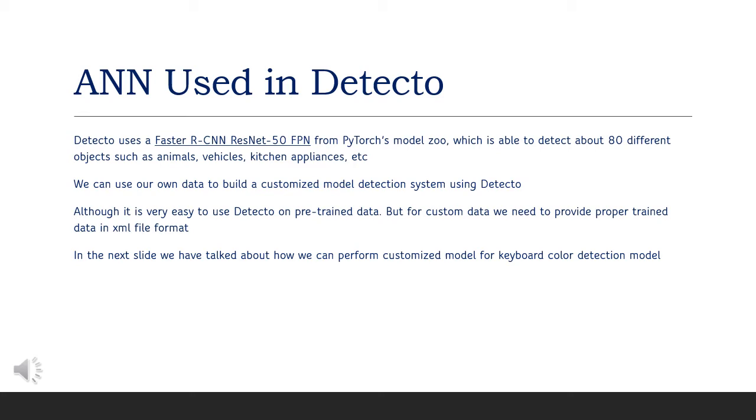It is way faster than normal R-CNN and is able to detect 80 different objects. What we are going to do is we are going to build a customized model detection system, which will help us to detect the type of keyboard in the given image.